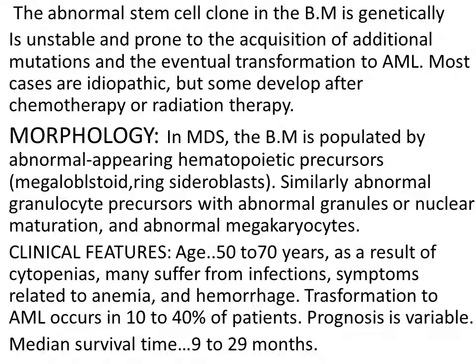Variable symptoms may be there — the patient feels something is abnormal but there is no specific diagnosis. These are different types of presentations in these patients. Transformation to AML occurs in ten to forty percent of patients — this is quite serious. These can change to frank acute leukemia within some course of time if untreated. Prognosis is variable; median survival time ranges from nine to twenty-nine months.